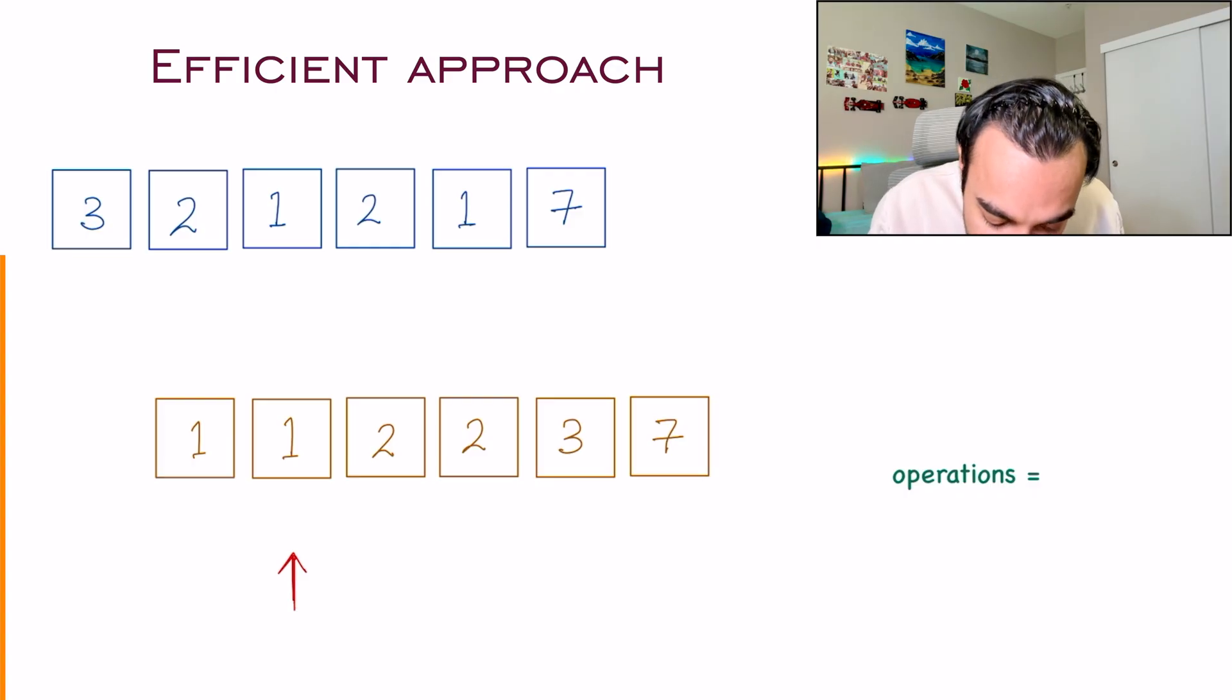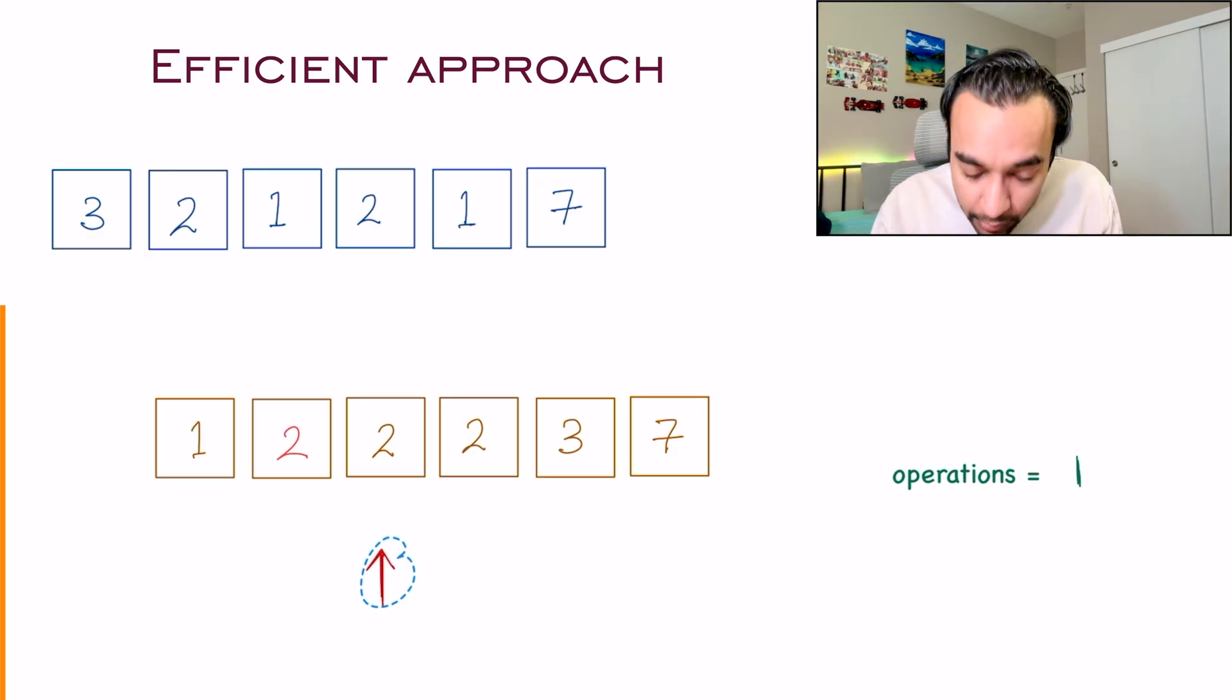So the best I can do is increment this number, and incrementing it will certainly make it different than the number I had in my previous location. So I will increment this number and change it to 2. So how much did I increment it by? I incremented it only by 1. That means I did 1 operation for now.